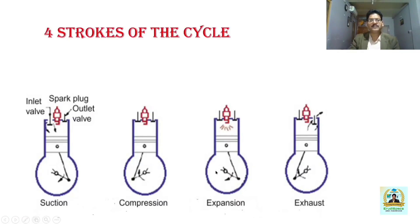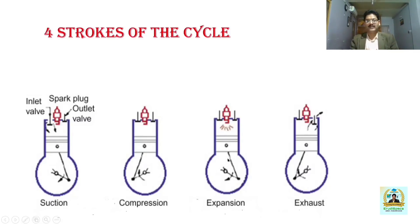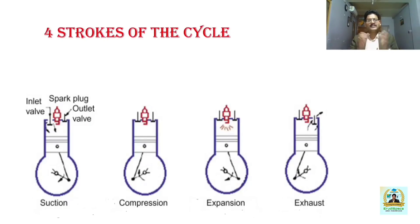Due to combustion of the air-fuel mixture, a huge amount of pressure and thermal energy is developed. As a result, it forces the piston to move from TDC to BDC. During the expansion stroke, both the inlet and exhaust valves are in the closed position. The process continues until the piston reaches BDC. This stroke is also known as the power stroke or working stroke, because it is the only stroke which contributes towards power development. The flywheel stores the energy developed during the expansion or power stroke and supplies the same during idle strokes.